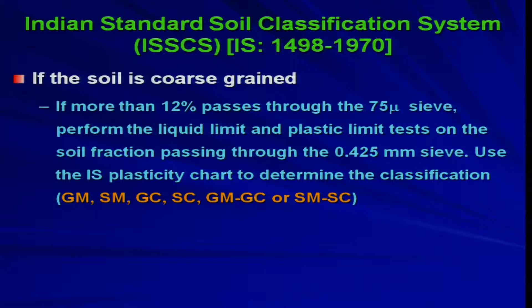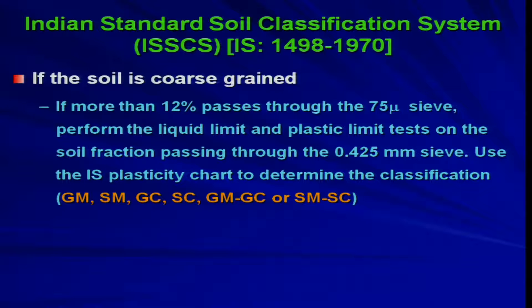Use the IS plasticity chart to determine the classification. There are three categories in coarse-grained soil: fine content less than 5 percent, fine content more than 12 percent, and fine content between 5 and 12 percent. When fine content is more than 12 percent, the fines will participate in property determination and you may get some plasticity. You need to perform liquid limit and plastic limit tests and use the IS plasticity chart to determine the soil symbol, which could be GM, SM, GC, or SC.